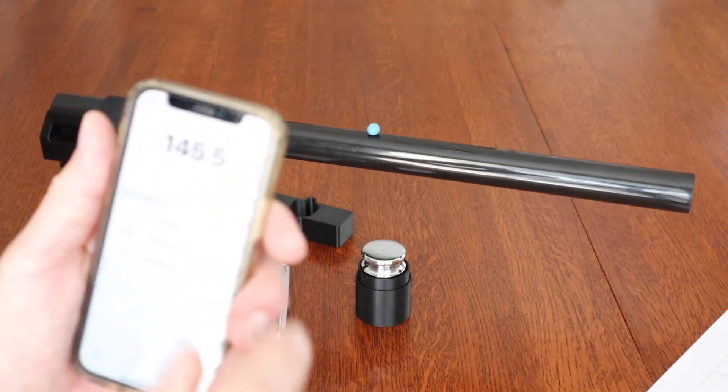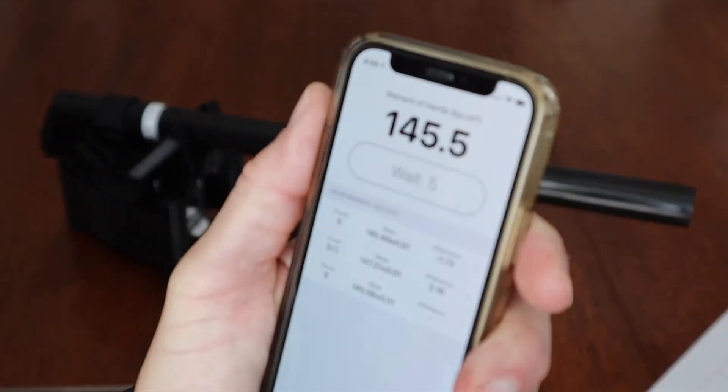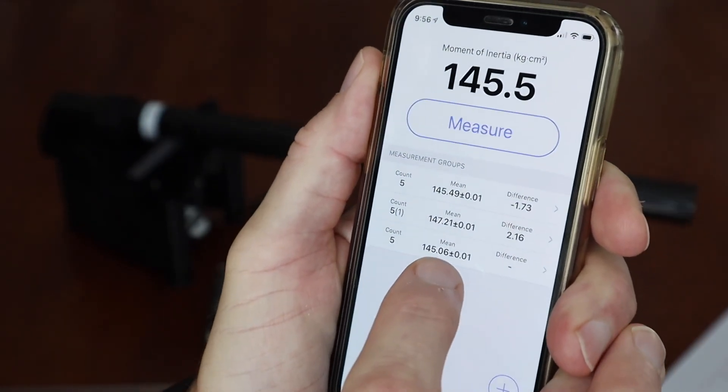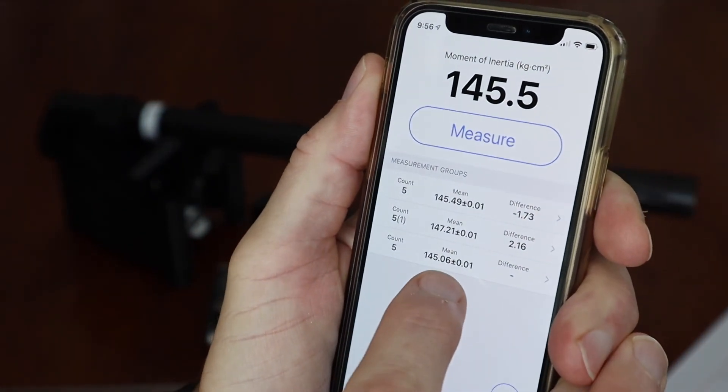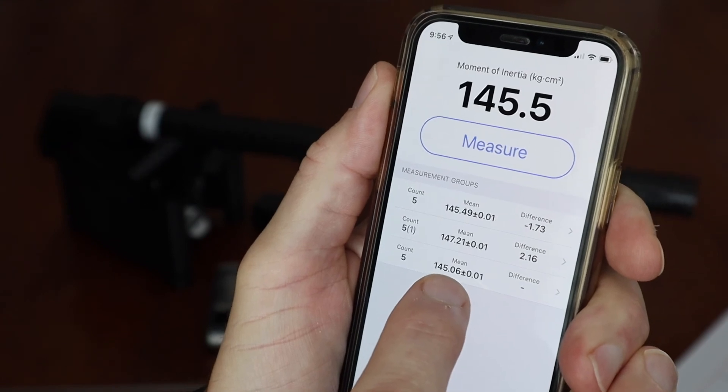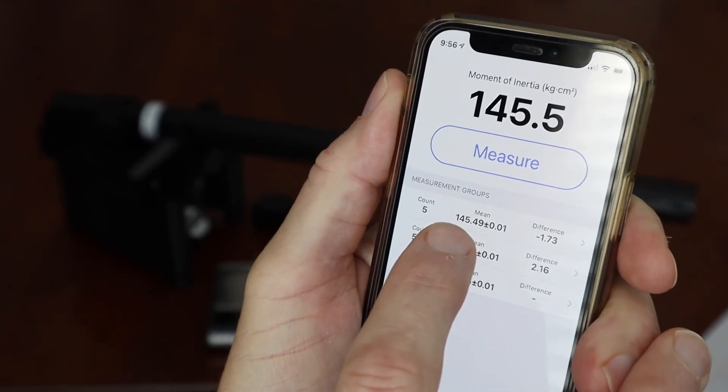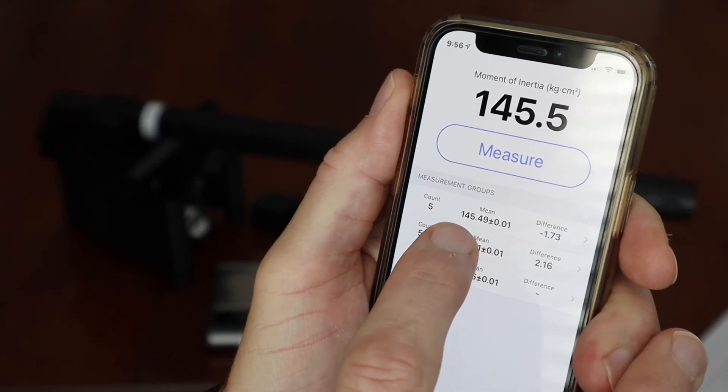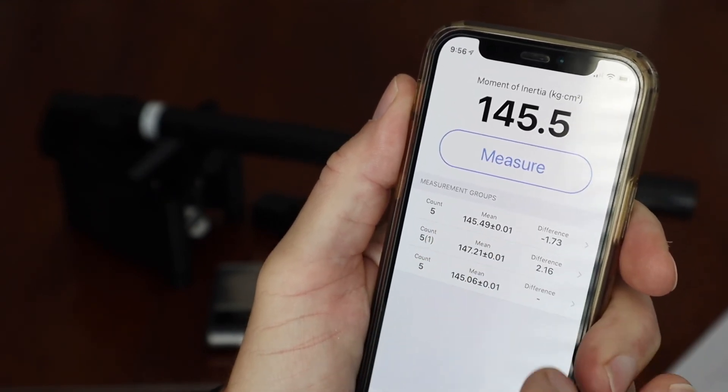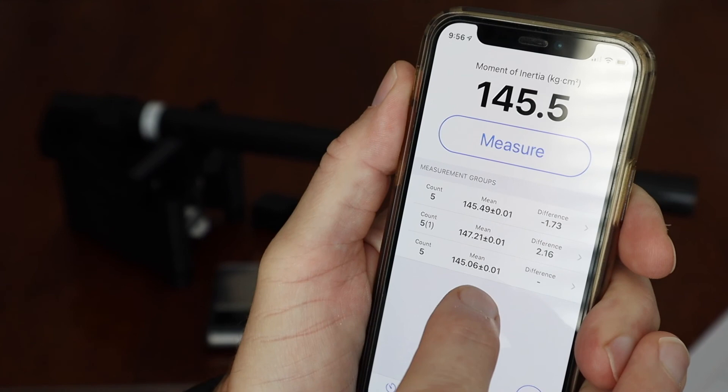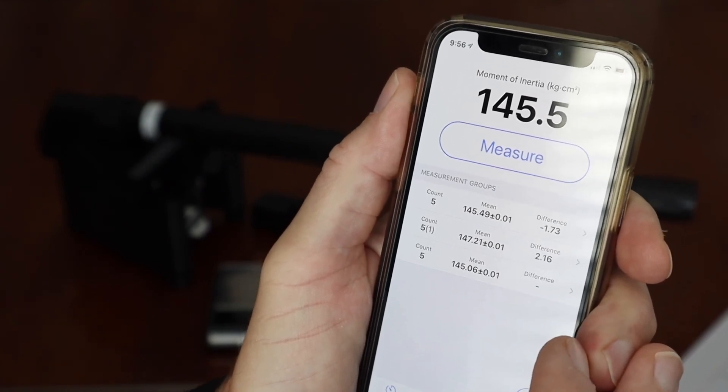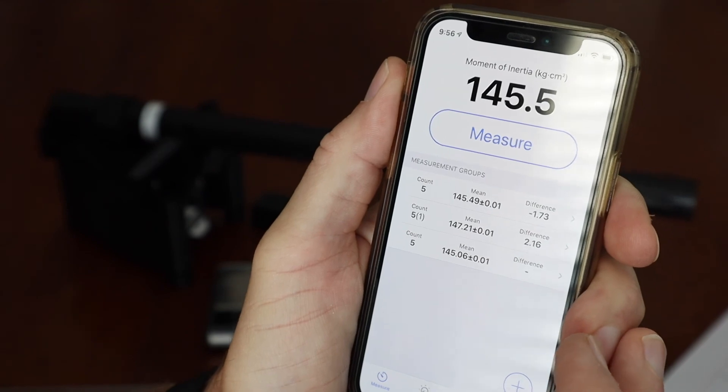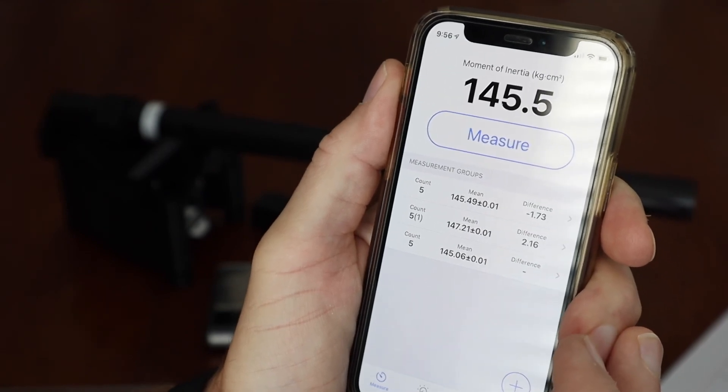And that's the result, let me let it focus here. So you can see the bare pipe was at 145.06, and then with that one gram at 30 centimeters it's 145.49, so that's a difference of 0.43 versus that theoretical of 0.40. So again pretty close.